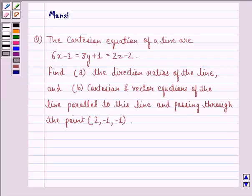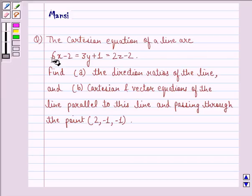Hi and welcome to the session. Let's work out the following question. The question says the Cartesian equation of a line are 6x minus 2 equals 3y plus 1 equals 2z minus 2.